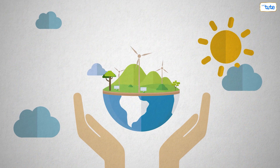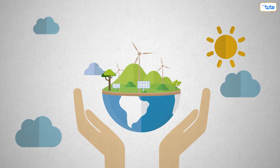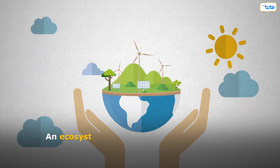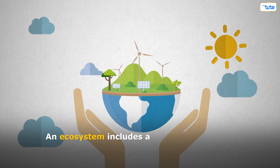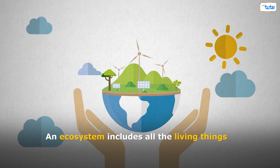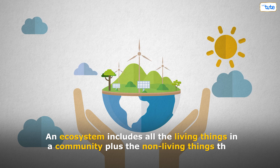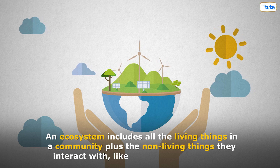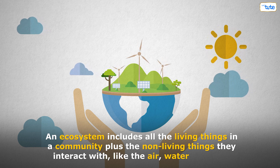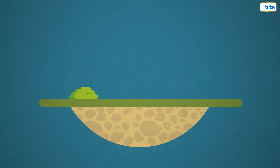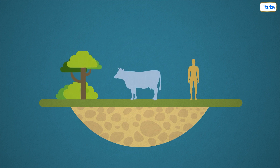The next level is ecosystems. An ecosystem includes all the living things in a community plus the non-living things they interact with, like the air, water, and soil. It's like the ultimate group project, where everyone and everything plays a role.